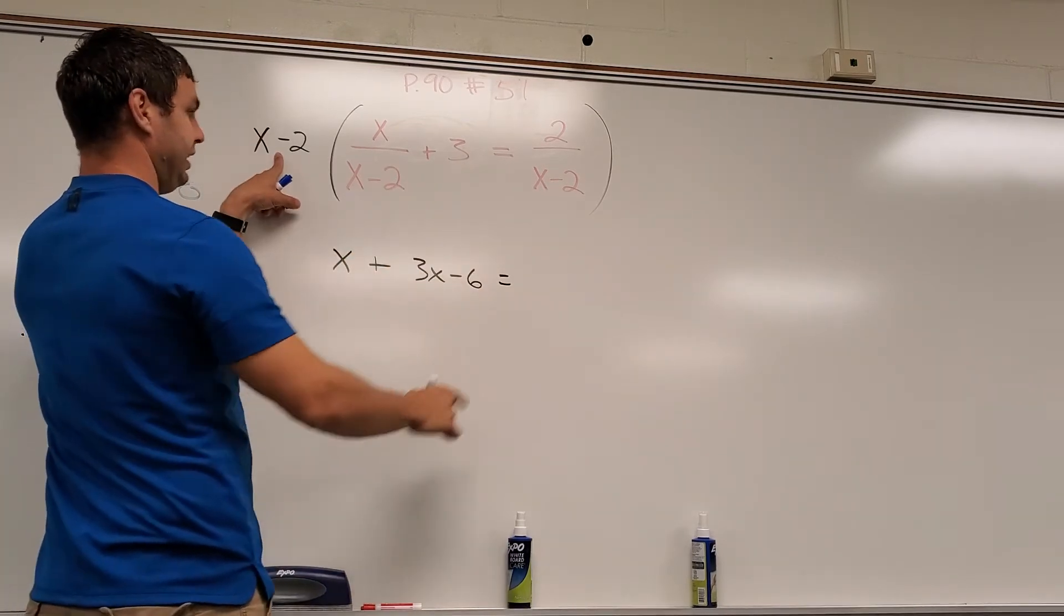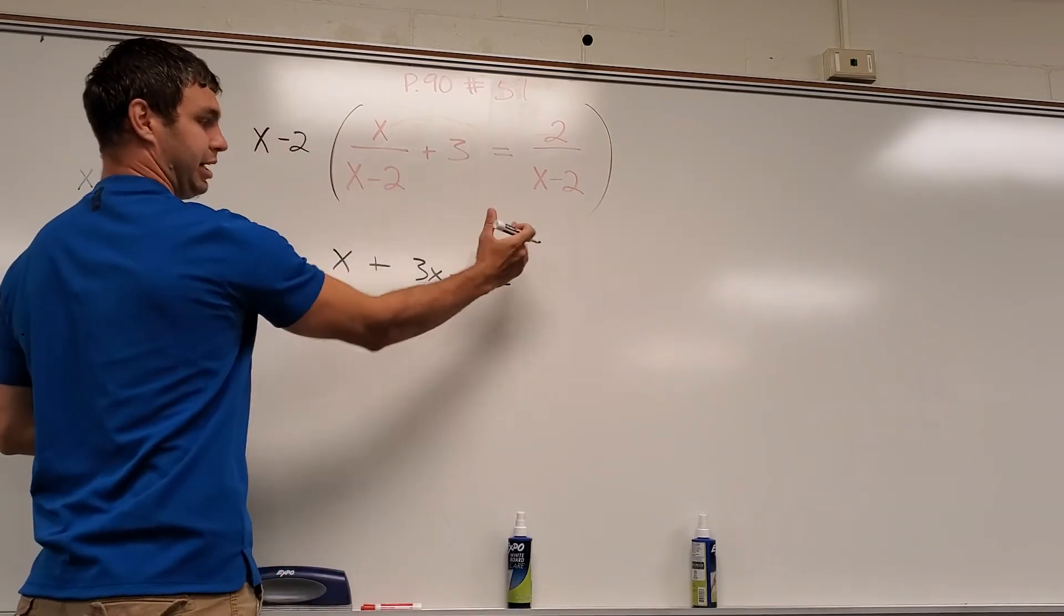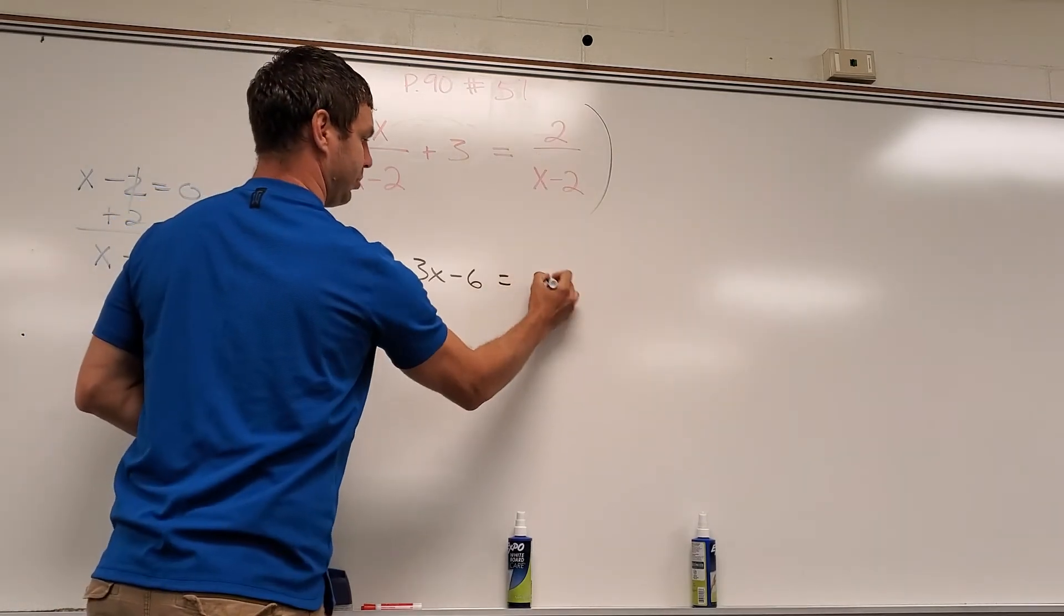On the other side, again, it's going to cancel the x minus 2 and the x minus 2 from the top and the bottom and just leave me with the top part, which is 2.